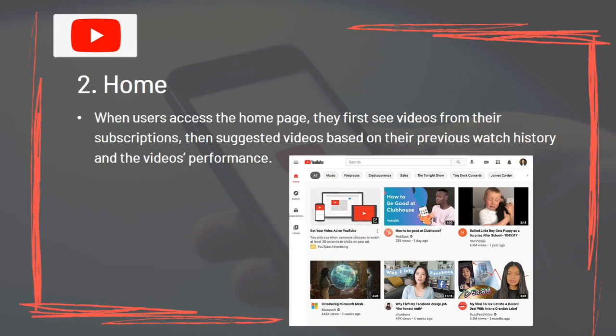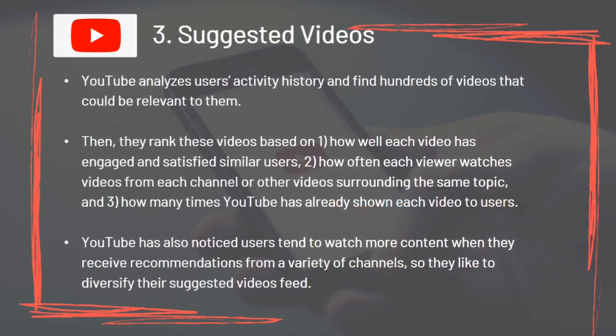For Home, when users access the homepage they first see videos from their subscriptions, then suggested videos based on previous watch history and video performance. For Suggested Videos, YouTube analyzes users' activity history and finds hundreds of potentially relevant videos, then ranks them based on how well each video has engaged similar users, how often each viewer watches from each channel or on the same topic, and how many times YouTube has already shown each video. YouTube tends to diversify suggested video feeds to encourage more viewing.